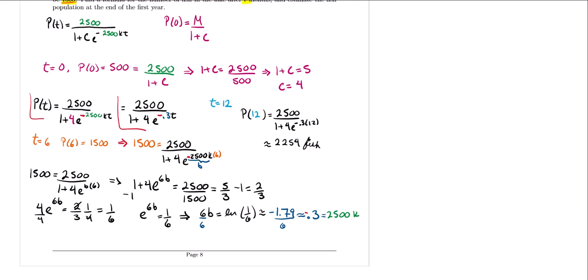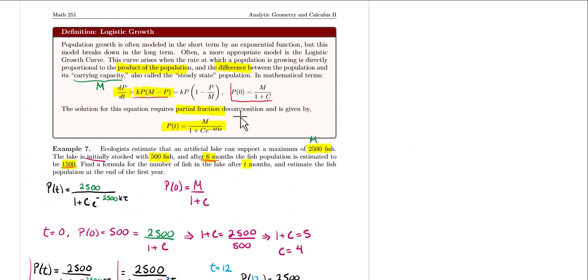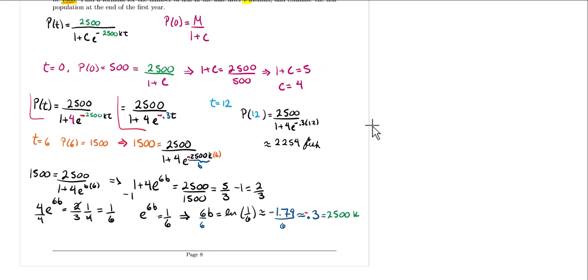This is it for part 3. In this problem we didn't do much calculus because I just used the formula — you don't have to worry about deriving it. The substitution using B was just to make life a little easier: we could have found K directly, but once we got negative 0.3 we would have divided by 2,500 and then multiplied again when plugging back in, so I took a shortcut to find the coefficient in front of T in the exponent.